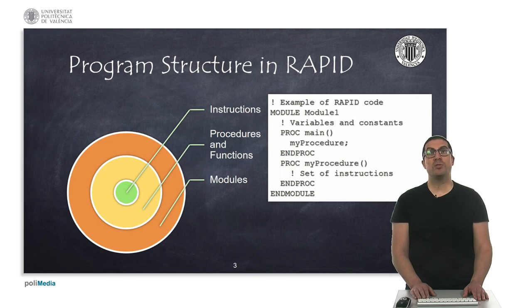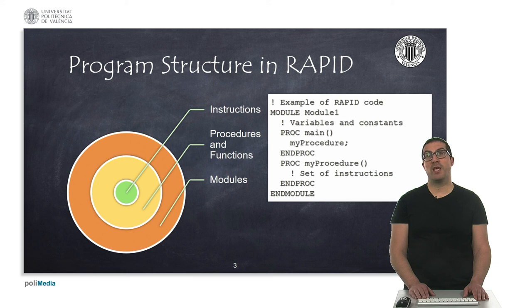The robot controller executes program modules that contain procedures and functions that also contain a set of instructions, as we will see later. Each module must have a main procedure, called main, that will serve as the entry point. In the main module, we can call another procedure, such as myProcedure in the code example provided.